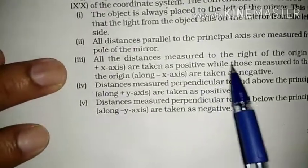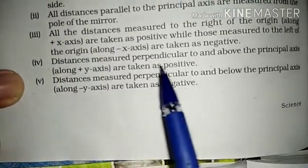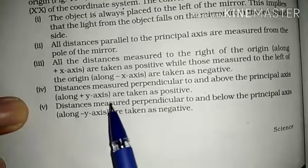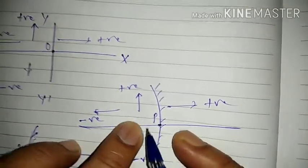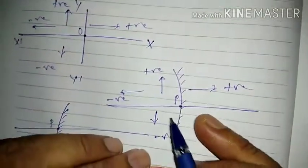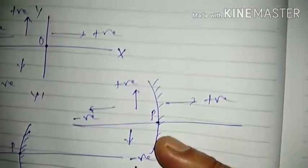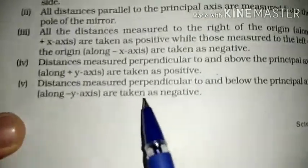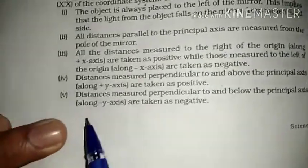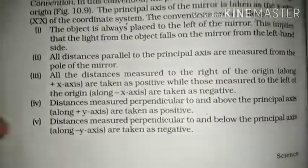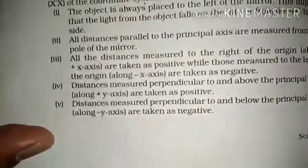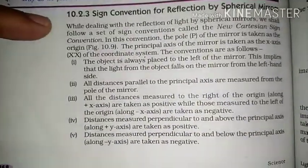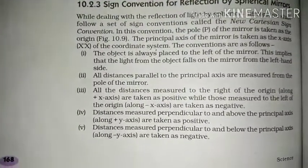So distances to the right of the pole are positive and to the left are negative. Fourth point: distances measured perpendicular to and above the principal axis along the Y axis are taken as positive. Fifth point: distances measured perpendicular to and below the principal axis along the Y axis are taken as negative. These five points are very important — pause the video and make your notes, as it will be very fruitful for your learning outcomes.